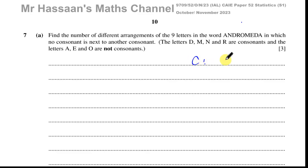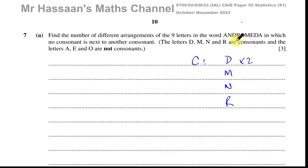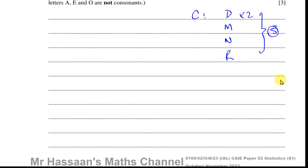The consonants are the letters D, M, N and R. We can see in this word the number of D's is 2, the number of M's is 1, and N and R are 1 each. So we have altogether 5 consonants. D is repeated.